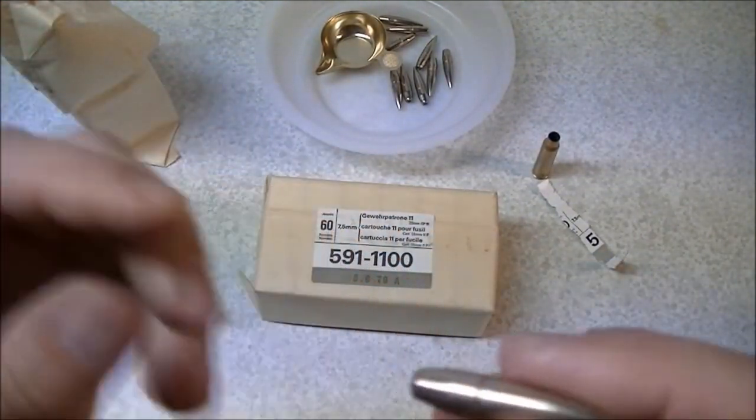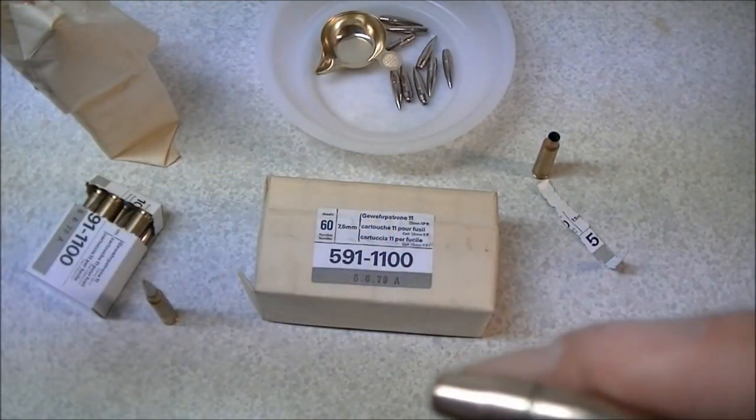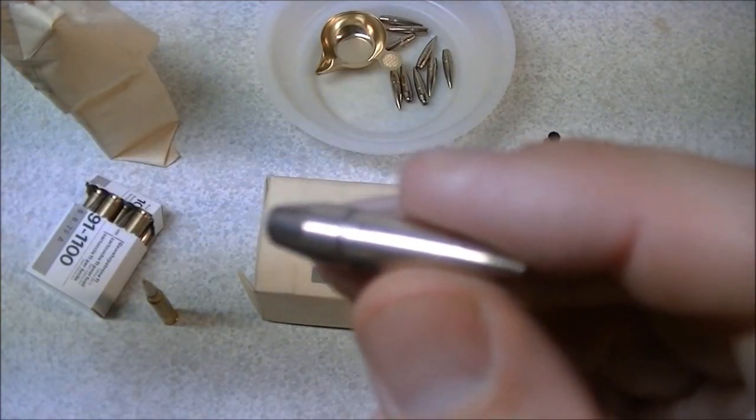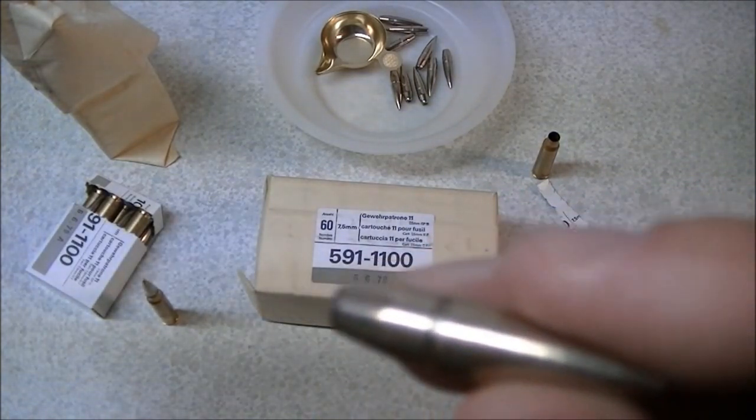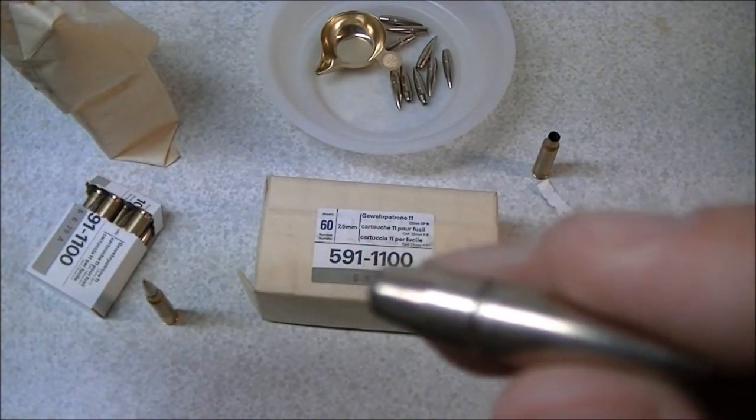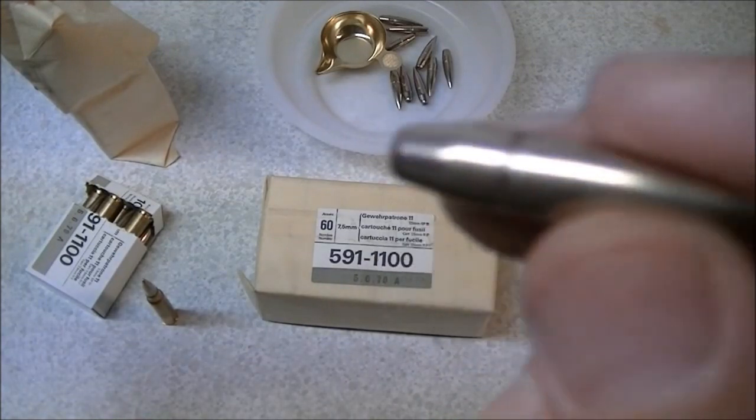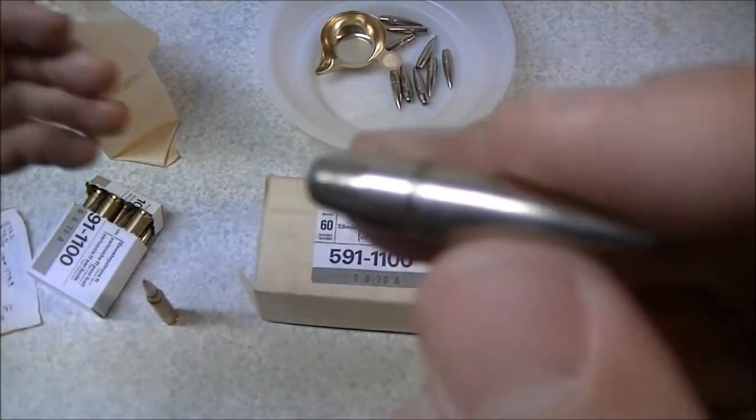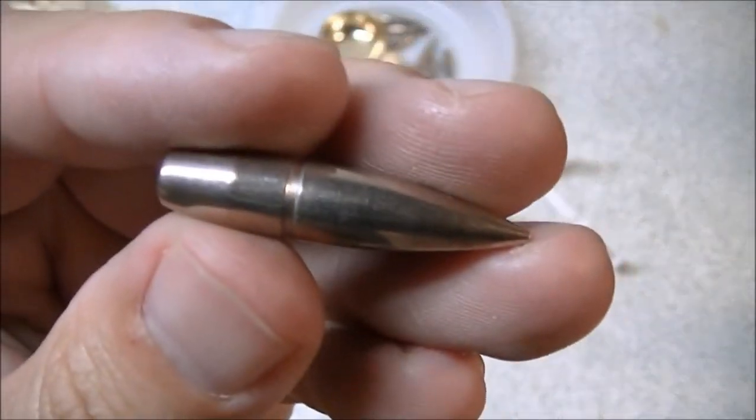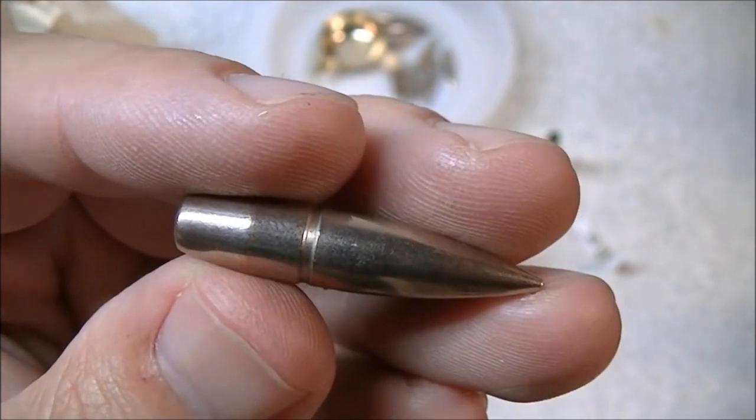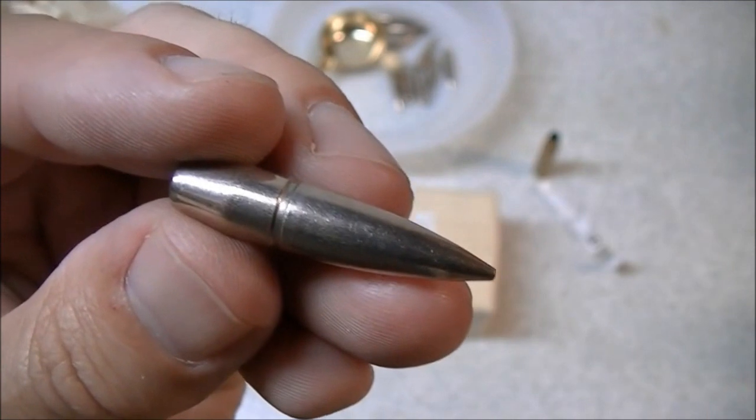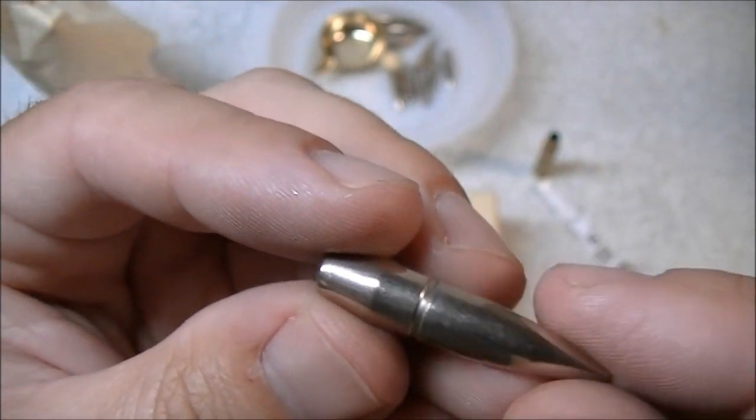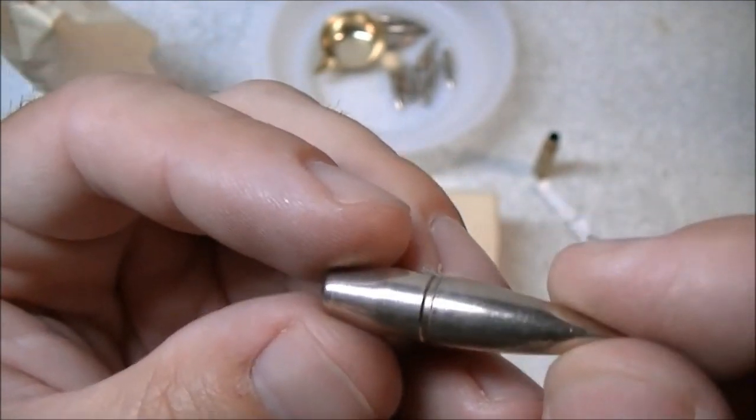I weighed 10 of these bullets in total and of the 10 the average weight came out to 174.92 grains and calculating the standard deviation for those 10 bullets, the standard deviation was 0.39 of a grain. So very consistent in weight. So that's pretty impressive for surplus type ammunition. I've weighed other surplus bullets pulled from cartridges where there was two grains of variance, two and a half grains of variance between cartridges, so these were spot-on the money.